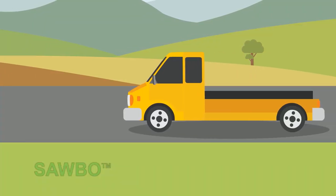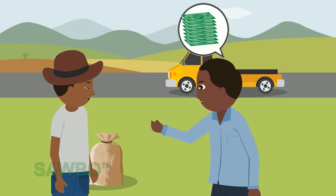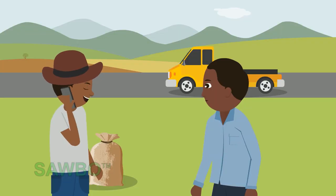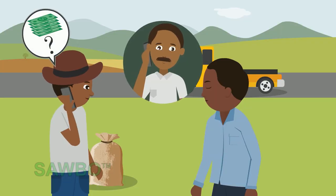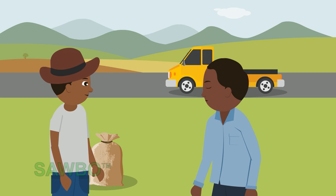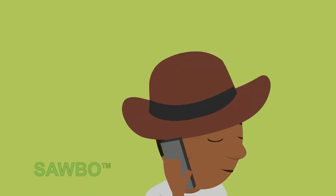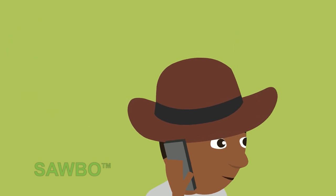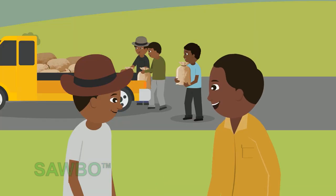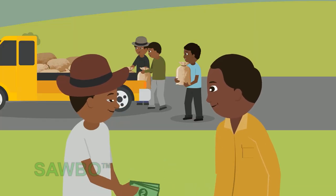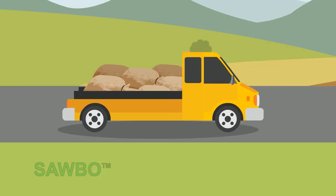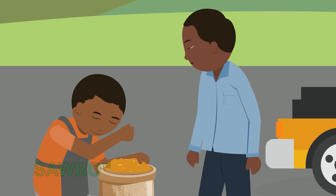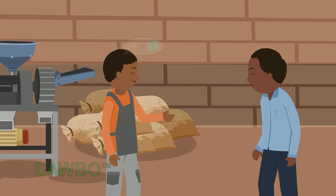When the trader arrives to buy this farmer's maize, the farmer is friendly. The farmer looks for information about the market situation by checking prices with other traders. He also asks other farmers if they want to sell with him. The farmer then sells his maize for a good price alongside other farmers. The trader easily sells the maize to the miller for a good price, as the maize is good quality.